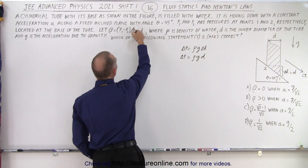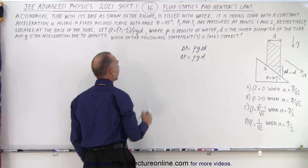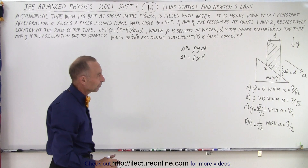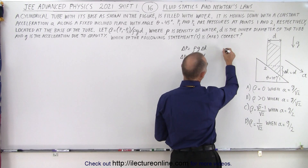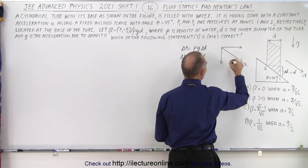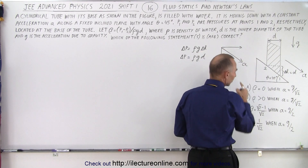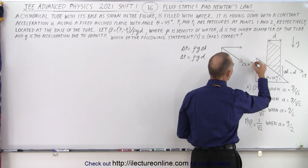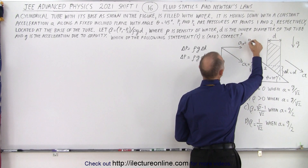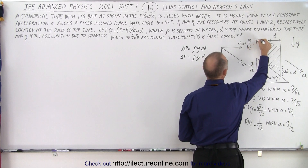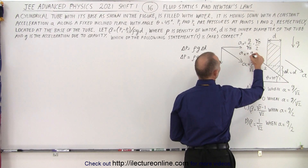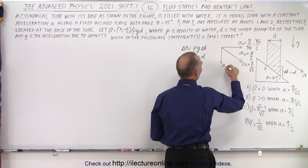Notice we have rho·g·d in the denominator and the difference in pressure in the numerator. To start: if something is accelerating along the incline with acceleration a, we have x and y components. Taking a equals g divided by the square root of 2, the x-component a_x equals g over the square root of 2 times the square root of 2 over 2 — this cancels — so a_x equals g over 2, and a_y also equals g over 2.